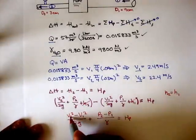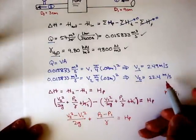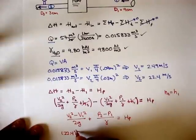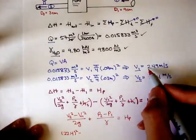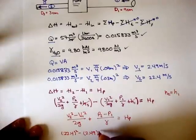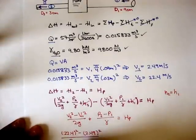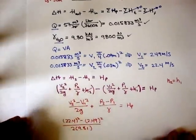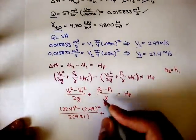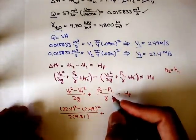Our velocity 2 we figured out was 22.4 meters per second, and velocity 1 was 2.49 meters per second. So we have 22.4 squared minus 2.49 squared over 2 times gravity, which in this case is 9.81.